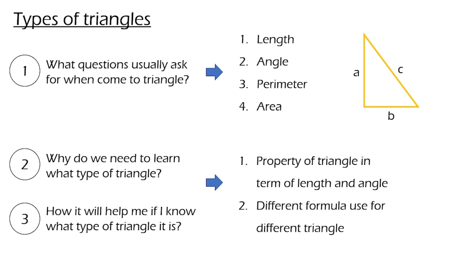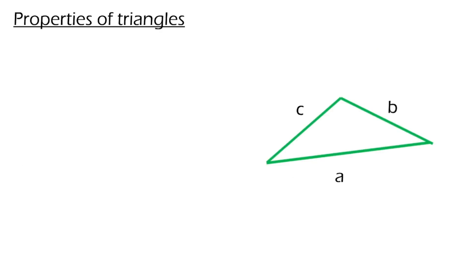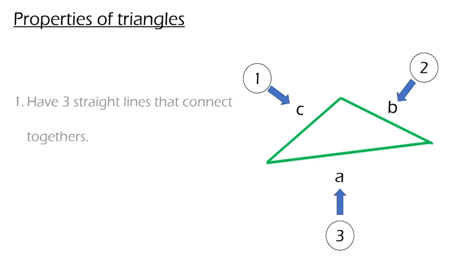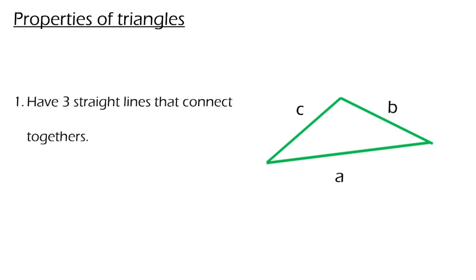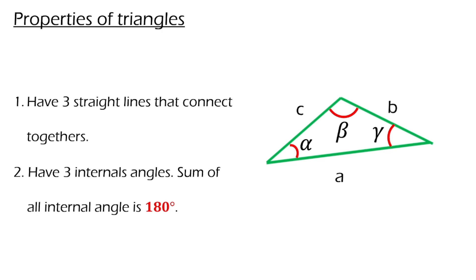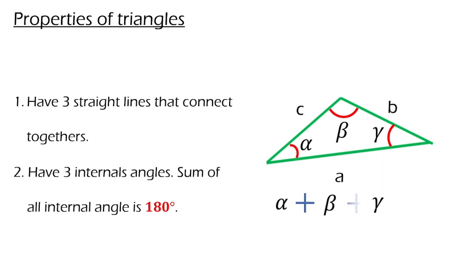Let's move on to the properties of triangles. All triangles have these properties. For any triangle, they will have three lines connected together. They also have three internal angles. The sum of the three internal angles will be equal to 180. So please remember this.